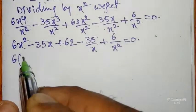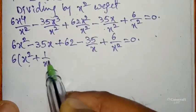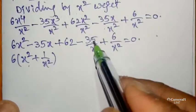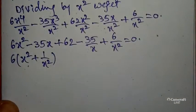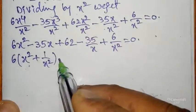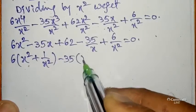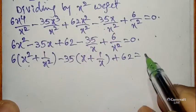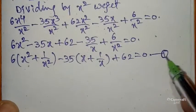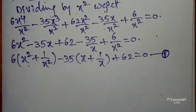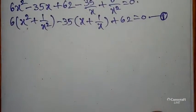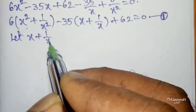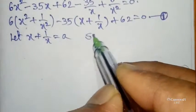Now grouping: from first and last, 6x² and 6/x² — 6 is common, leaving x² + 1/x². From second and second-to-last, minus 35x and minus 35/x — minus 35 is common, leaving x + 1/x. So the equation becomes: 6(x² + 1/x²) minus 35(x + 1/x) plus 62 equals 0. Let this be equation 1.